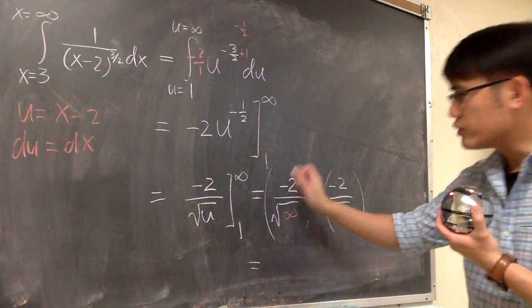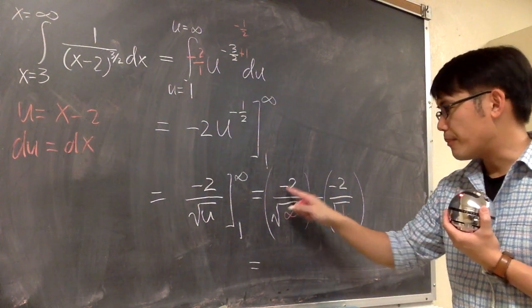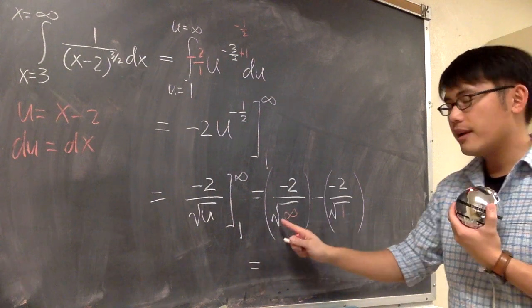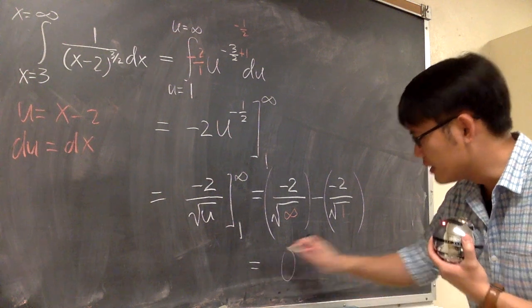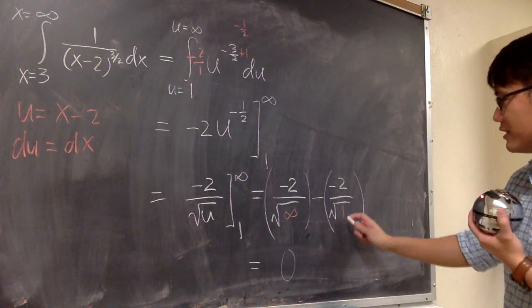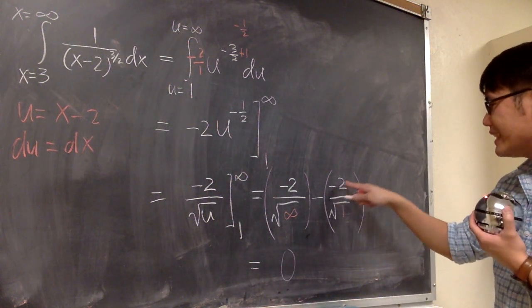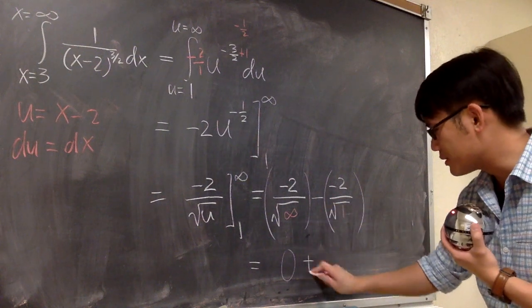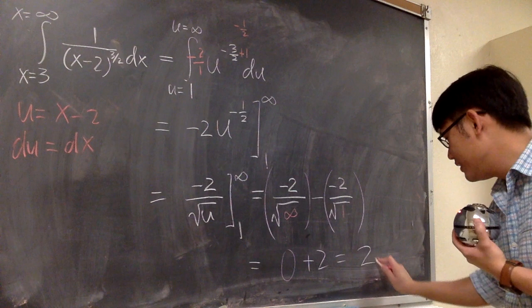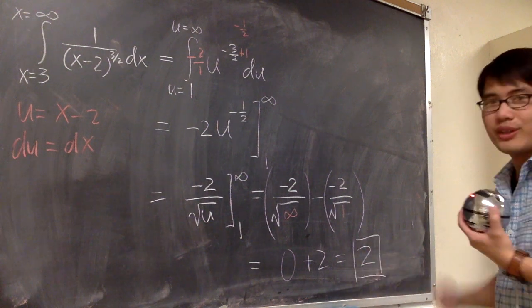Based on the expression, you see this is a number, negative 2 over square root of infinity, which is infinity. So we know this is 0. And this is just a finite number, negative 2 over 1. And then negative, negative 2, we have plus 2. So altogether, the answer for this is just 2. And that's it.